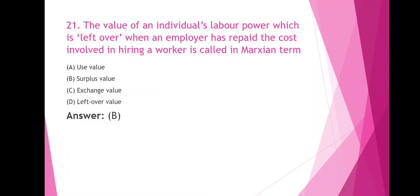The value of an individual's labor power which is left over when an employer has repaid the cost involved in hiring a worker is called, in Marxian terms, option A use value, option B surplus value, option C exchange value, option D leftover value. The right answer is option B, surplus value.